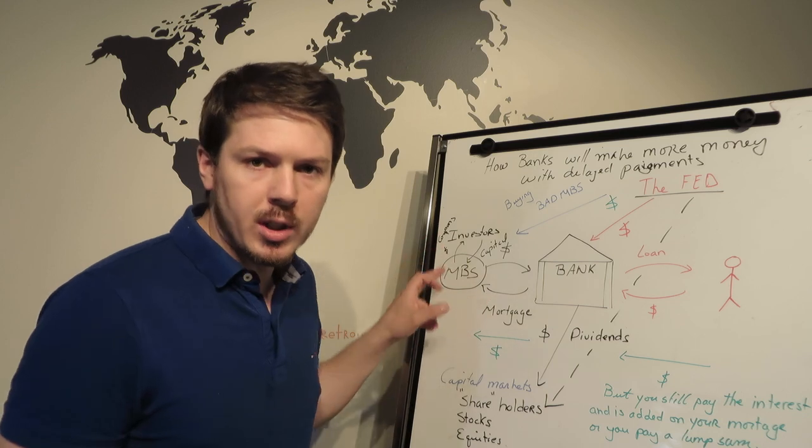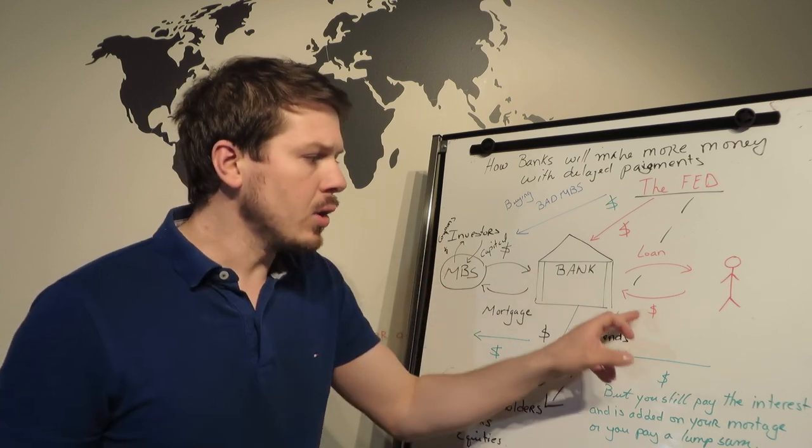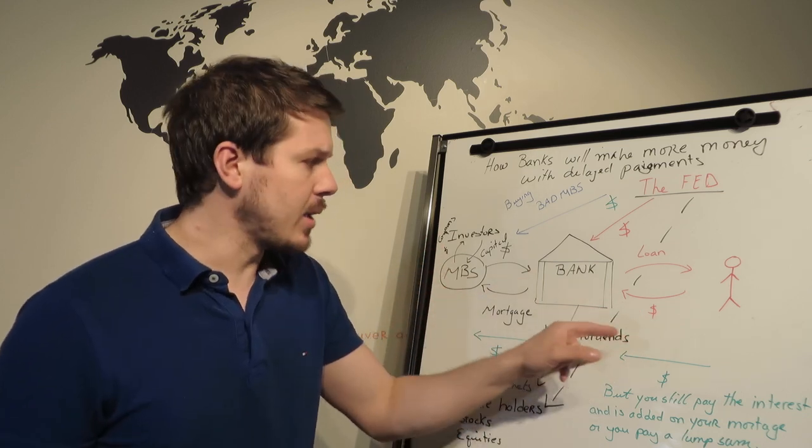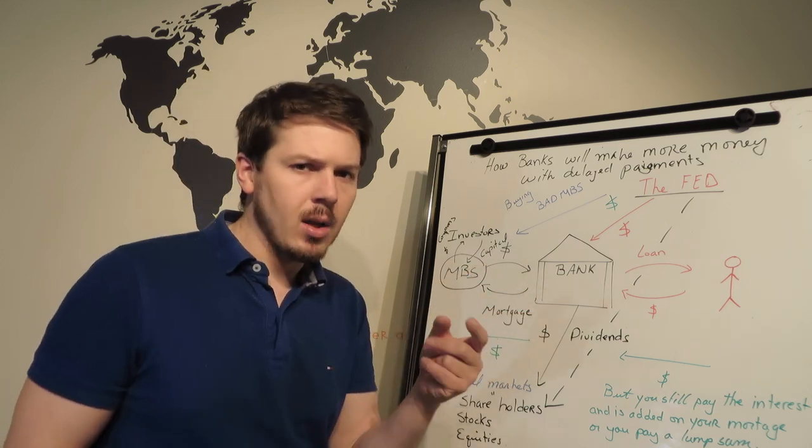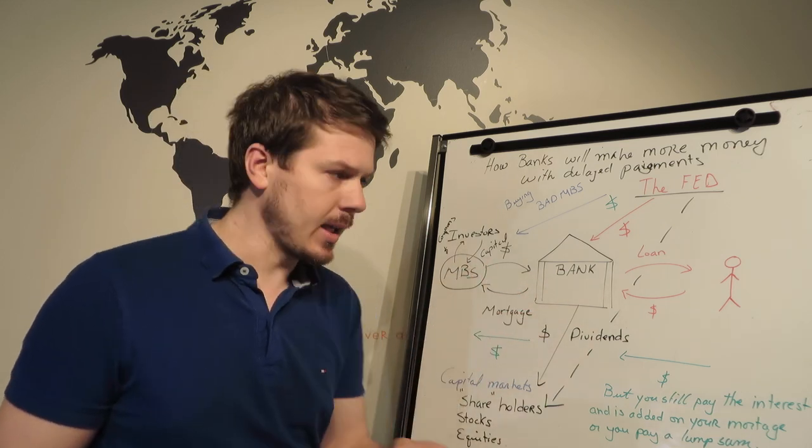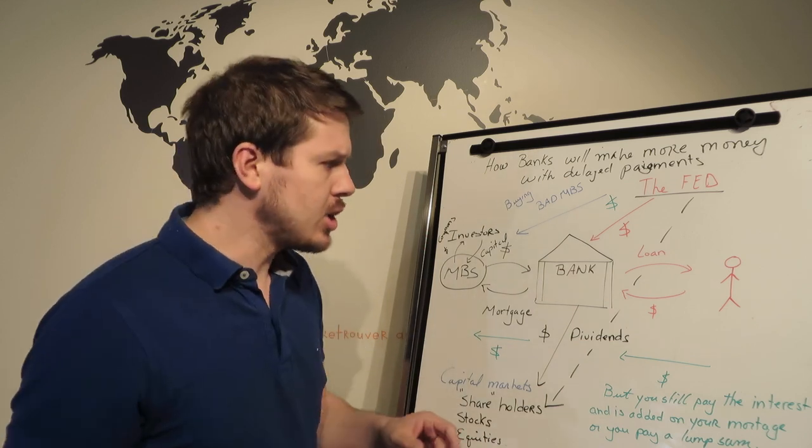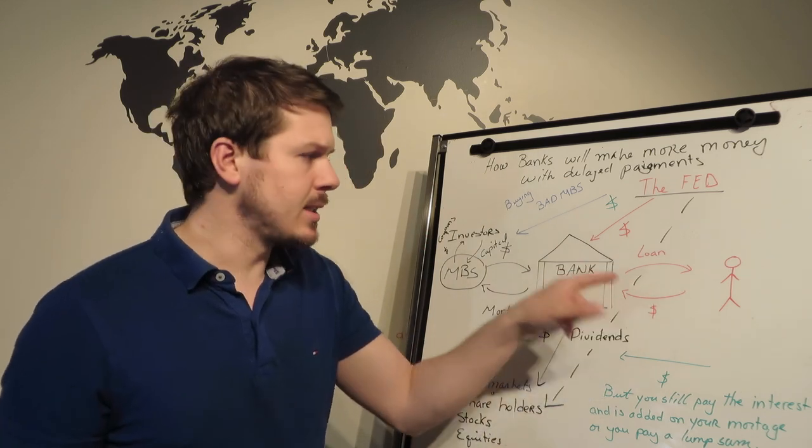And then they're sending the interest or the coupons to these mortgage-backed securities, while you're still charged with that interest. So that means the banks are essentially making two times the money.